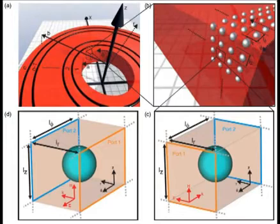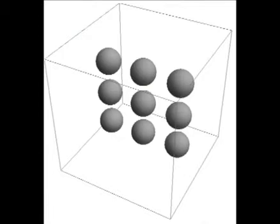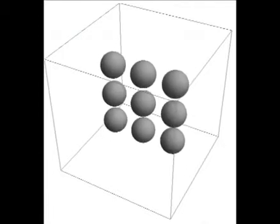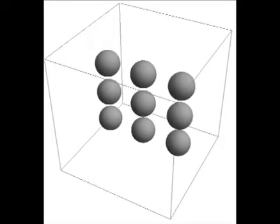The optical metamaterial we are presenting consists of silver spheres which are embedded in a host medium of PMMA. The silver spheres possess a diameter of 12 nanometers. We vary the effective permittivity by changing the distances between the silver spheres and thus tailoring the interaction strength.